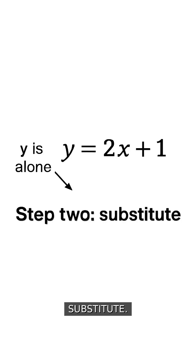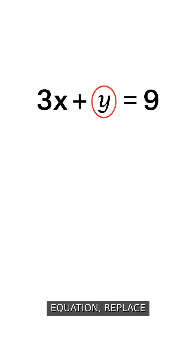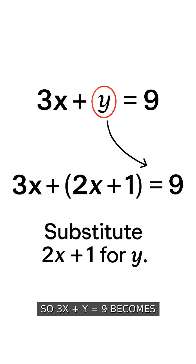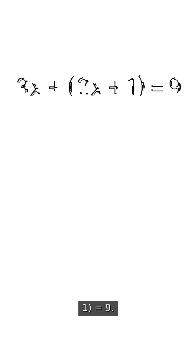Step 2. Substitute. Wherever you see y in the other equation, replace it with 2x plus 1. So, 3x plus y equals 9 becomes 3x plus 2x plus 1 equals 9.